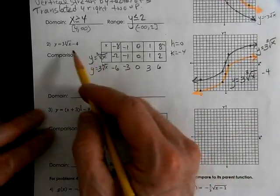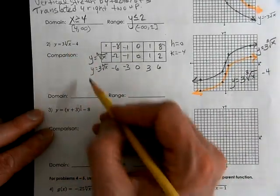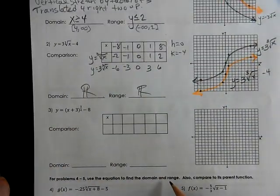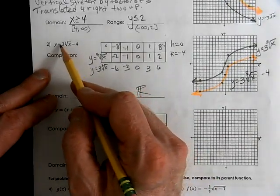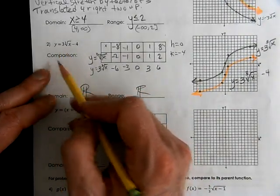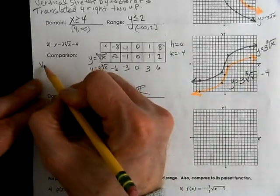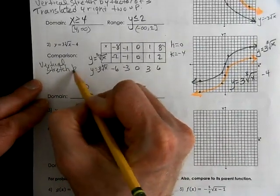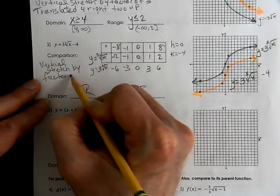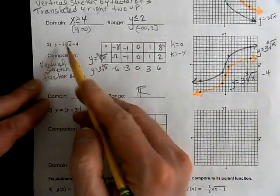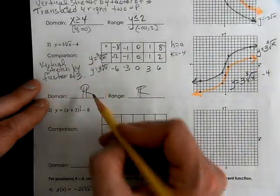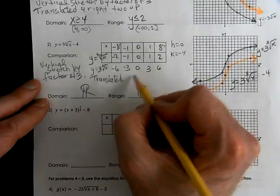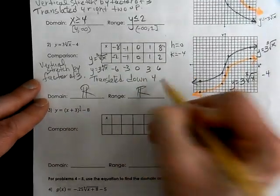We know our domain and range for a cube root is always all real numbers. In our comparison, we have no reflection — there's no negative in front, so we don't have to talk about it. We have a vertical stretch by a factor of 3, and then we have our k value: translated down 4.